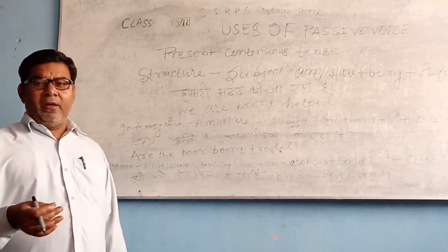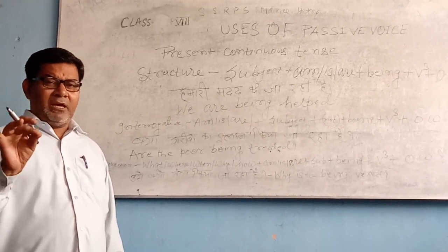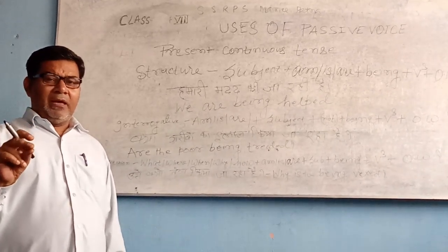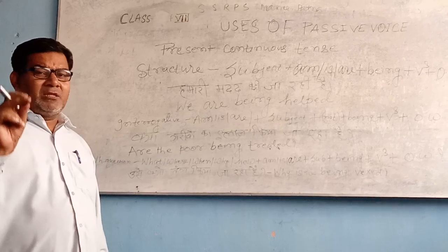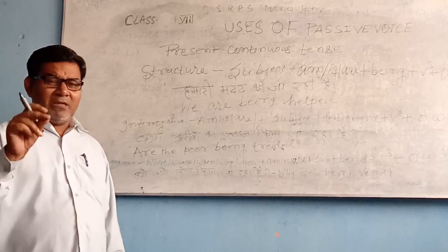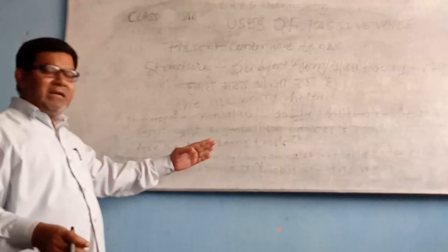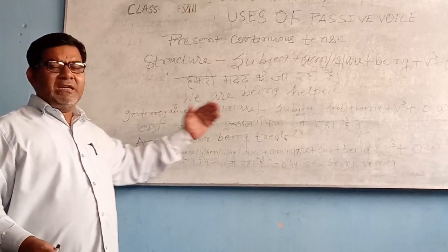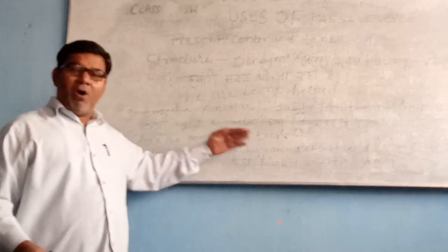इस बात को अच्छी तरह से समझें कि Passive Voice बनाते समय चाहे किसी भी Tense का sentence हो, उसमें verb का तीसरा रूप ही लिखेंगे। और यह भी समझें कि Present Continuous Tense का जो structure है, उसी प्रकार तीनों Continuous Tenses — Past Continuous, Future Continuous — इन सभी का यही form होगा।